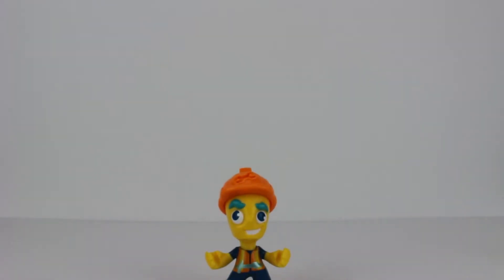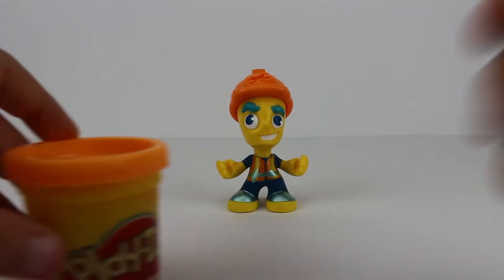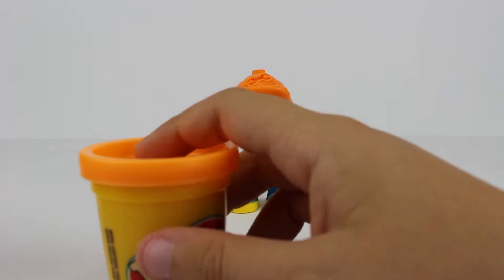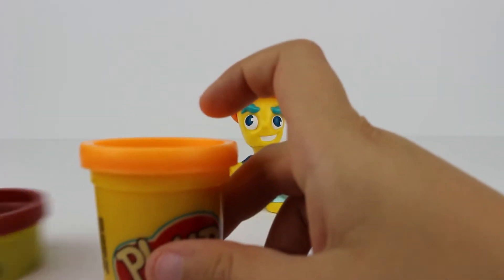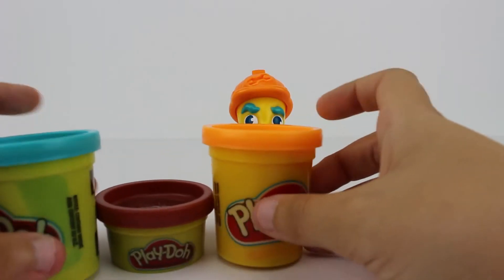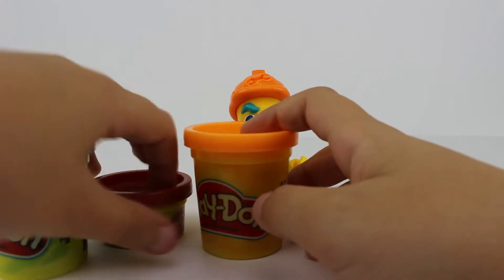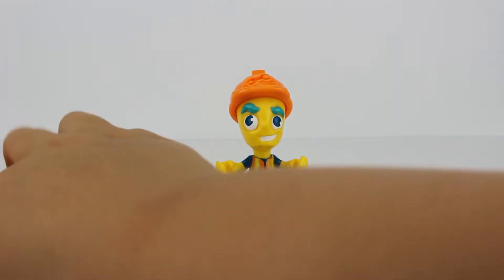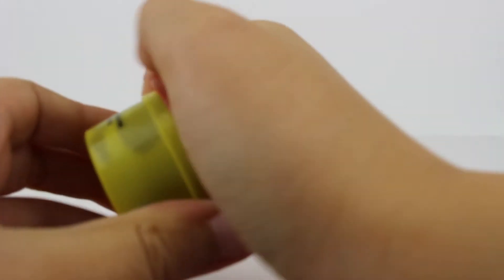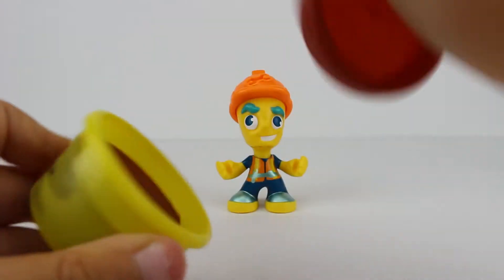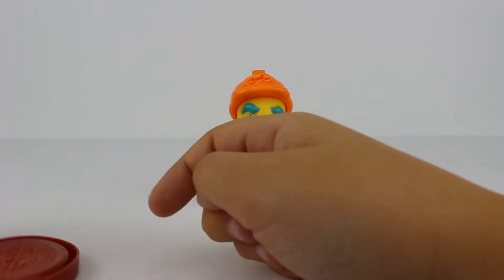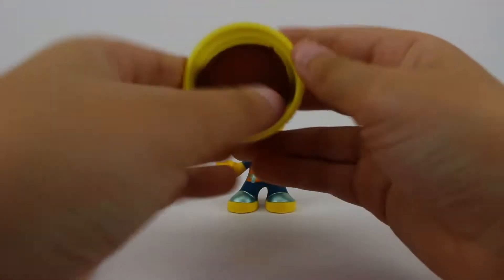So let's play with this. Now let's open the color, the Play-Doh. Let's see which one. Hmm. I think I'm going to open the brown one first. Or red. Dark red. Don't know. Tight.